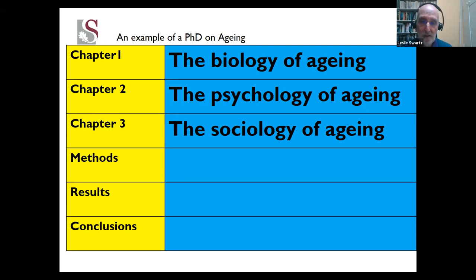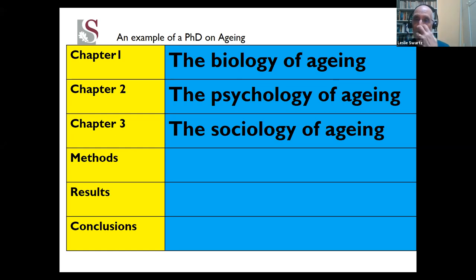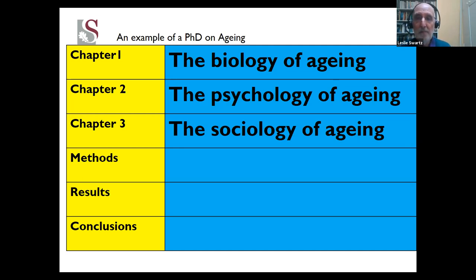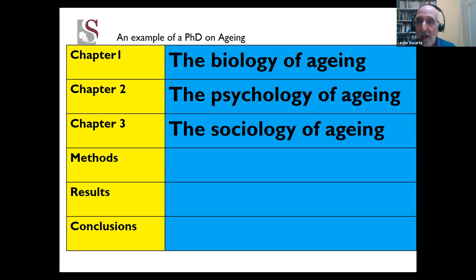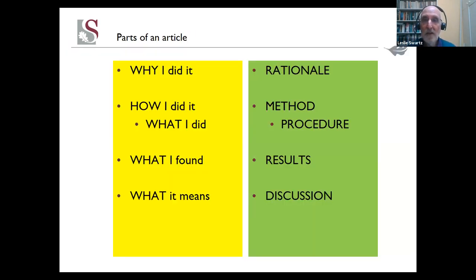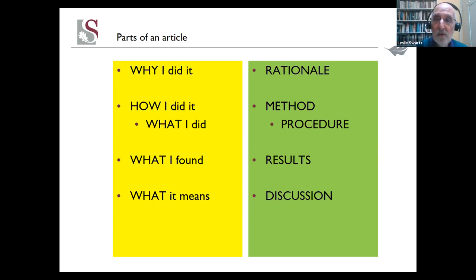Generally speaking, what does an article look like? I know we're dealing with a multidisciplinary audience. You can have a fight about what the difference is between a rationale and a justification — I don't understand any of those terms, but I have over 400 publications, so I'm doing something right. What does your reader want to know? It's very simple: why did you do your study? How did you do it? What procedures did you go through? What did you find? And what does it mean? That's all they're interested in.